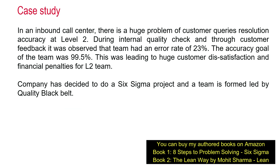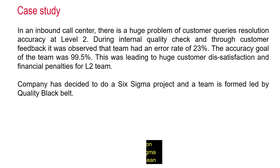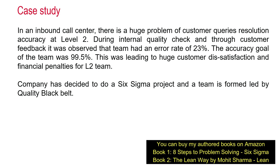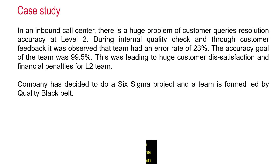The business case states that in an inbound call center, there is a huge problem of customer query resolution accuracy at level 2. During internal quality check and through customer feedback, it was observed that the team had an error rate of 23%. The accuracy goal of the team was 99.5%. This was leading to huge customer dissatisfaction and financial penalties for the L2 team. The company decided to do a Six Sigma project and a team was formed, led by a Quality Black Belt.